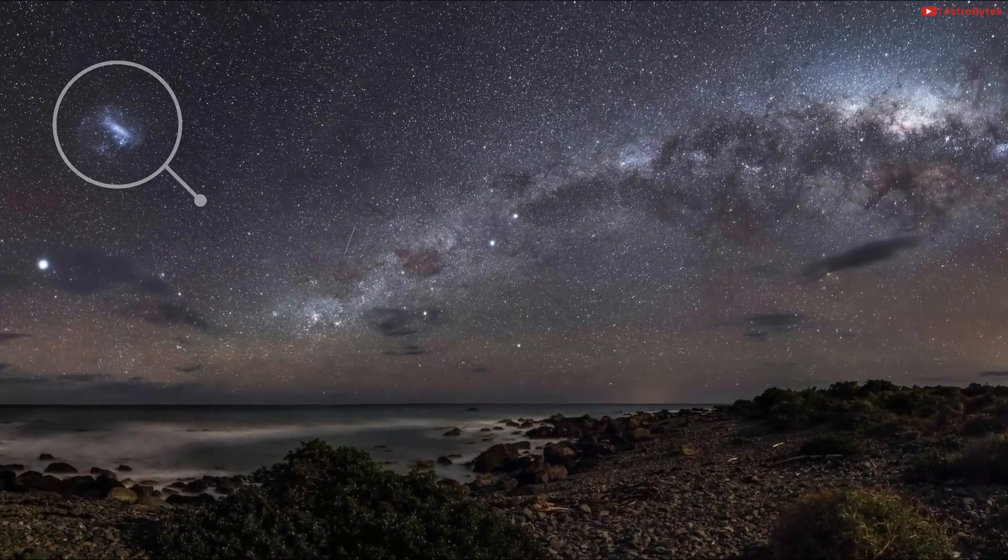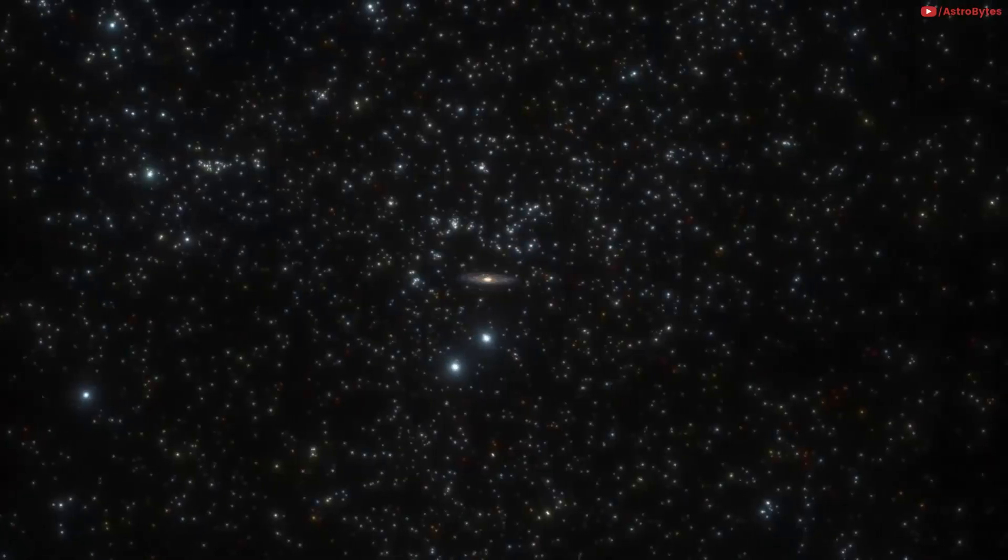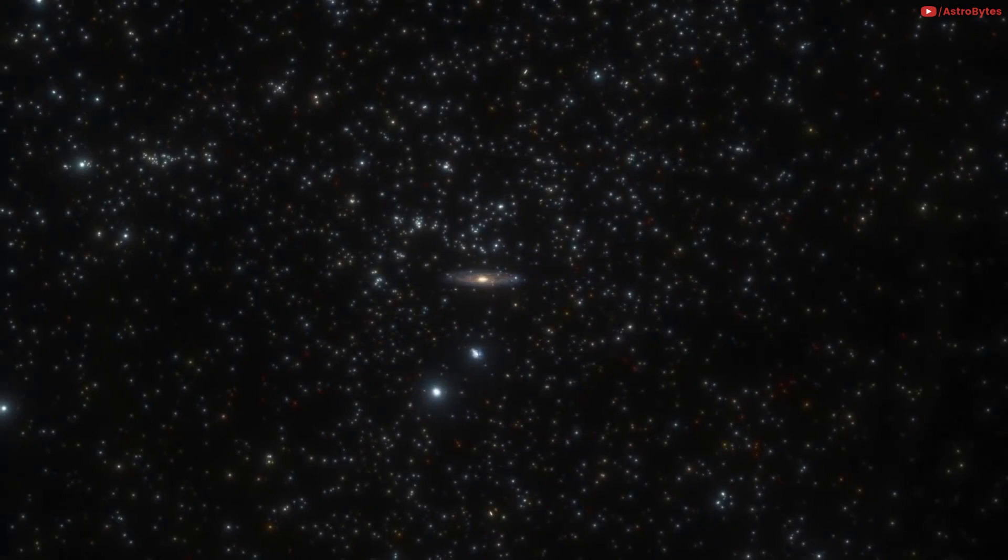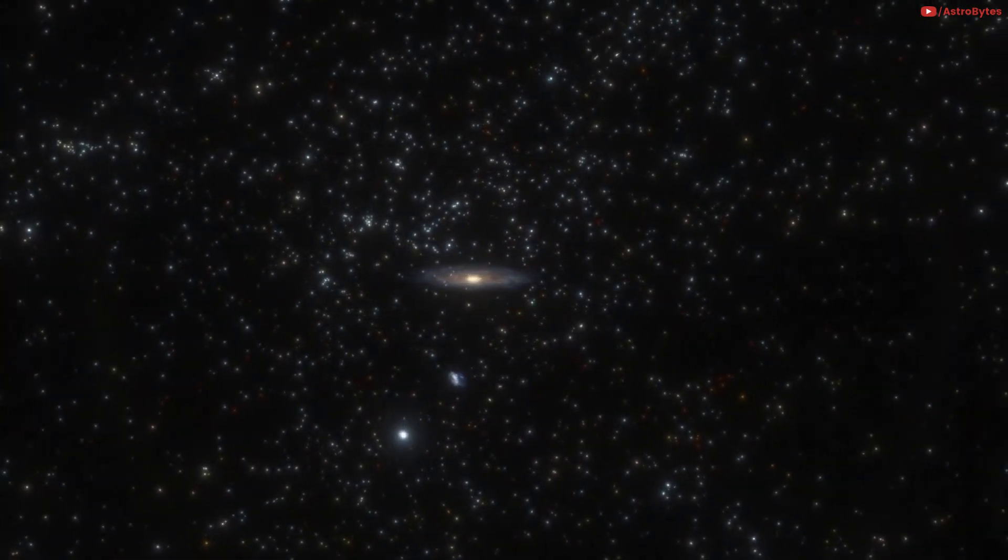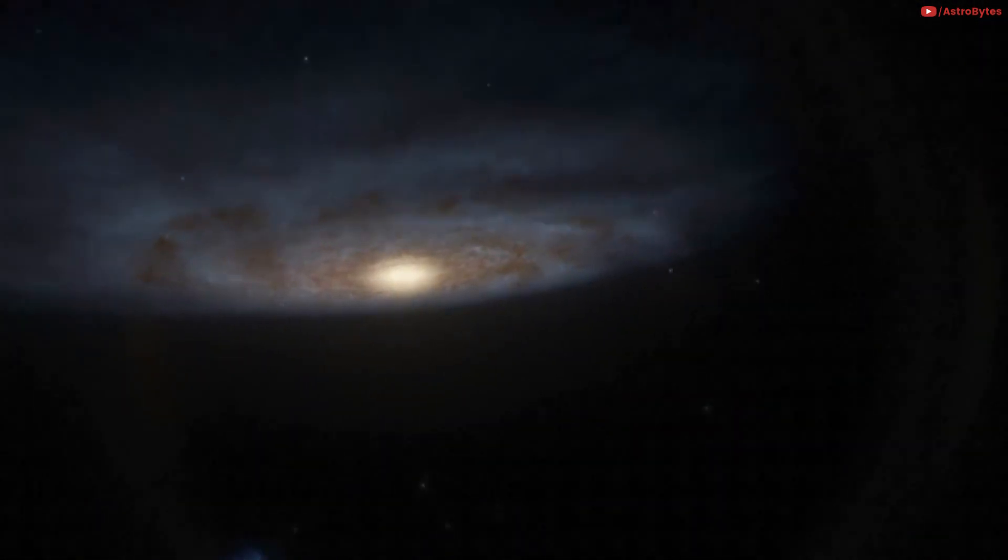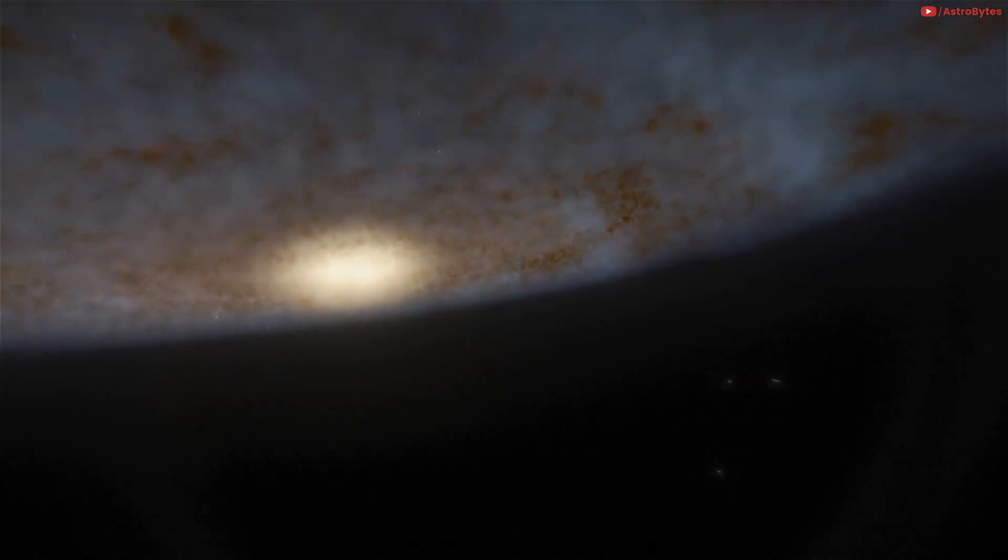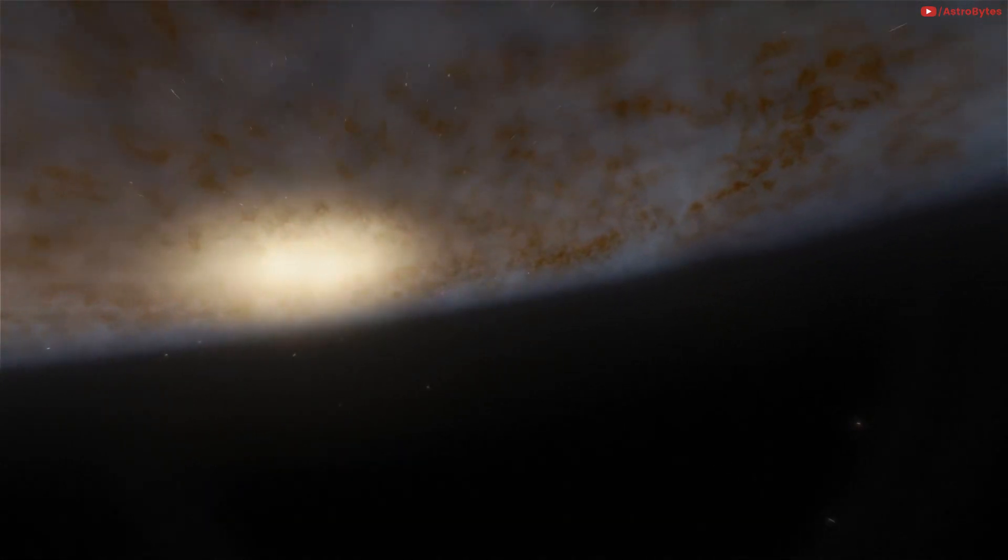Although several dozen minor galaxies lie closer to our Milky Way, the Andromeda galaxy is the closest large spiral galaxy to ours. It is the nearest major galaxy to the Milky Way and it gets its name from the area of the sky from which it appears.